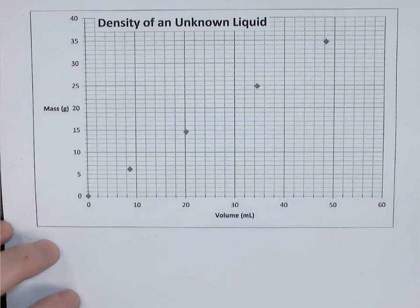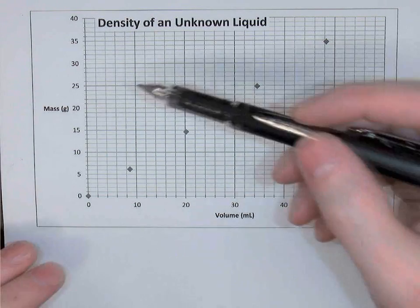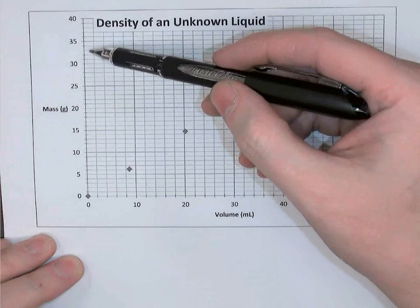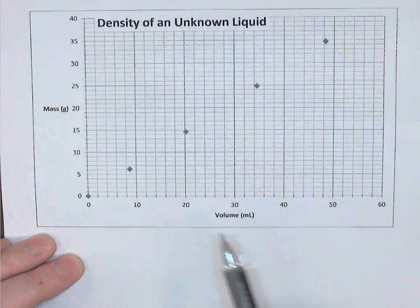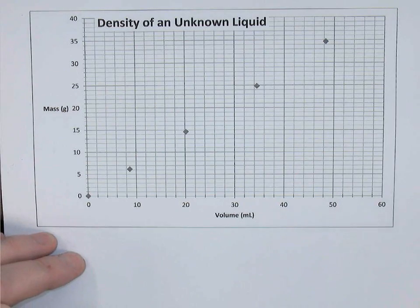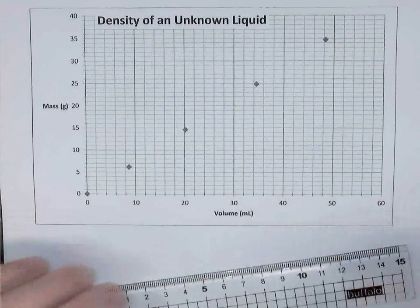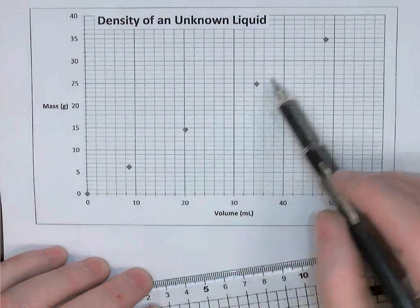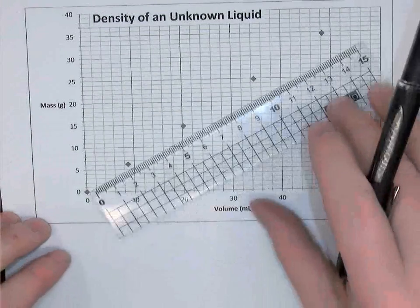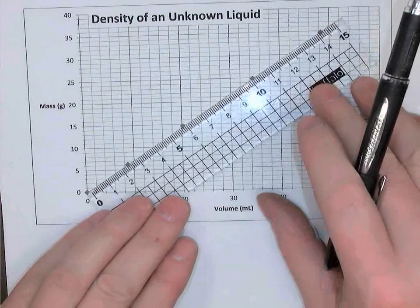So we've collected some data and we've graphed it here using a scatter plot. The graph shows the mass of the substance on the y-axis, and on our x-axis the volume in milliliters. And we can see that this graph shows five data points, and they pretty much form a nice straight line.